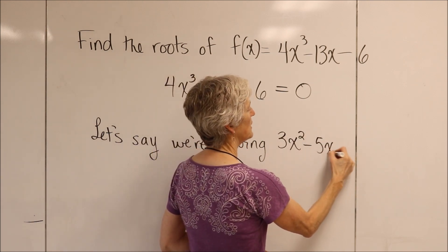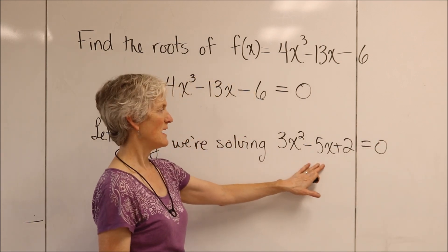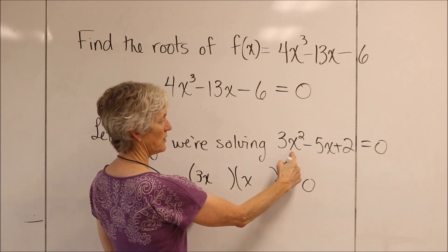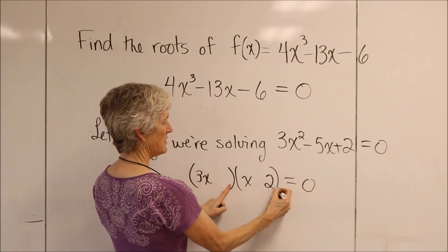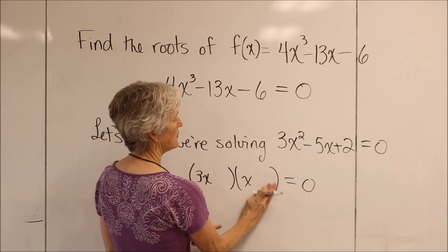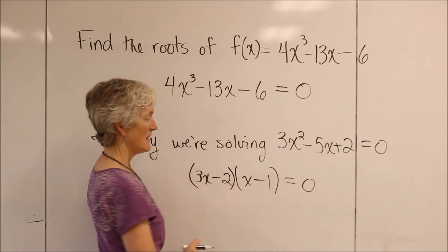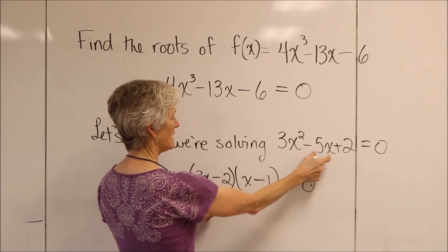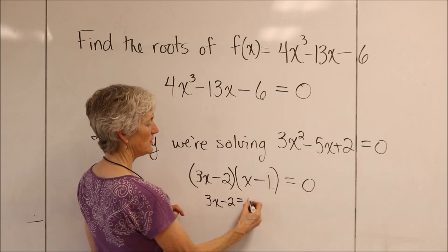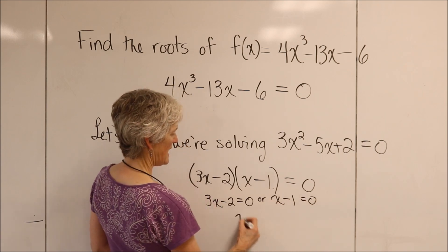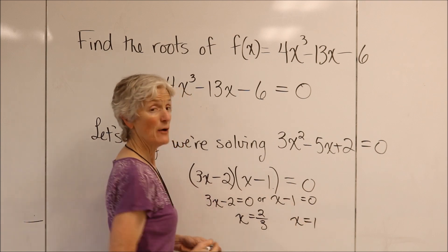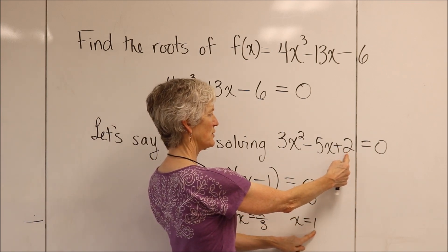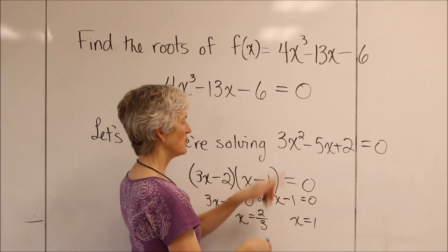Let's say we're solving 3x squared minus 5x plus 2 equals 0. That one I think we can factor. We'd set up our sets of parentheses. These terms multiply to equal 3x squared, these two multiply to equal 2. The 2 goes here and the 1 goes here because they both have to be negative — negative 3x minus 2x gives me my negative 5x. Both of my solutions are factors of my last term.